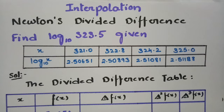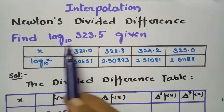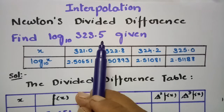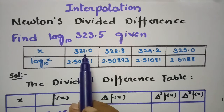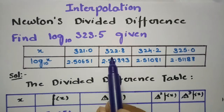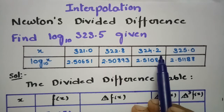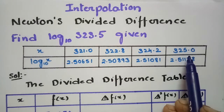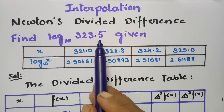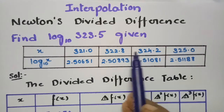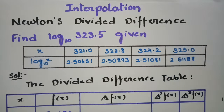In today's video we are going to solve the problem using Newton divided difference. This topic is from interpolation and we have to find log of 323.5, given the x values 321, 322.8, 324.2, and 325. We have to find out the value of 323.5, which is in between these values.